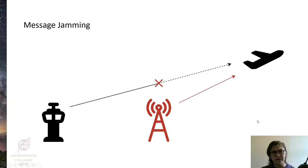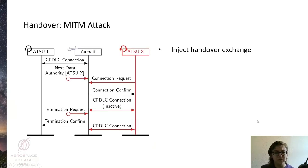One approach we can take is to block the termination confirm message we see here, and that would result in a handover attack, which would be hard to detect until the ATSU-1 attempts to issue a new command, at which point the aircraft wouldn't respond because it had already handed over.